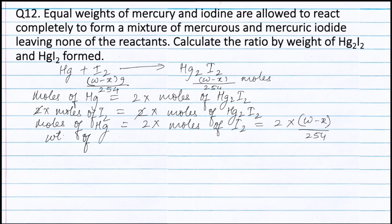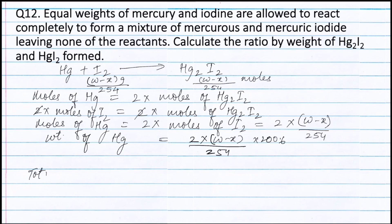Therefore weight of mercury in this reaction equals moles of mercury multiplied by atomic weight of mercury, that is 200.6. Now we know the weight of mercury in both reactions. Therefore the total weight of mercury W will be: x divided by 254 multiplied by 200.6, plus 2 into (W minus x) divided by 254 multiplied by 200.6.